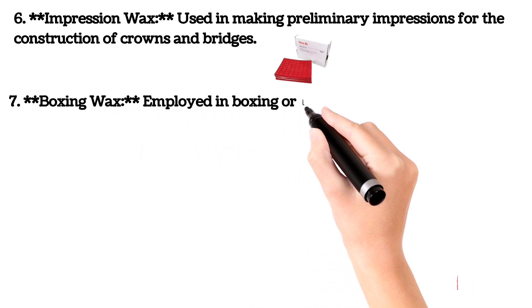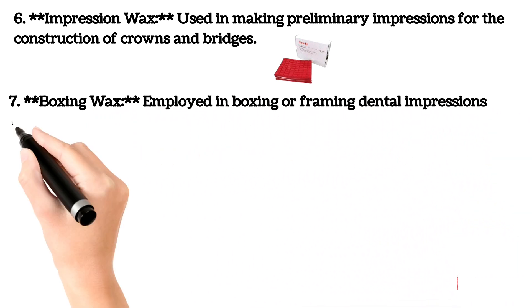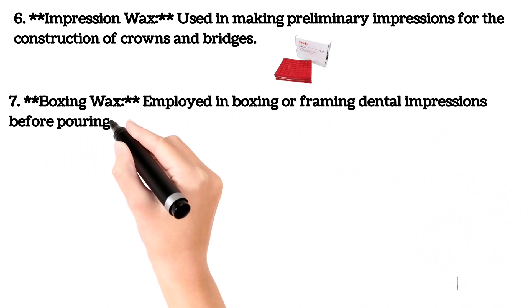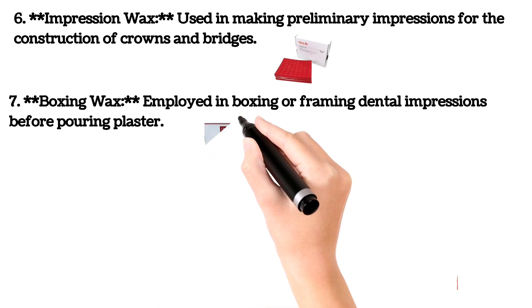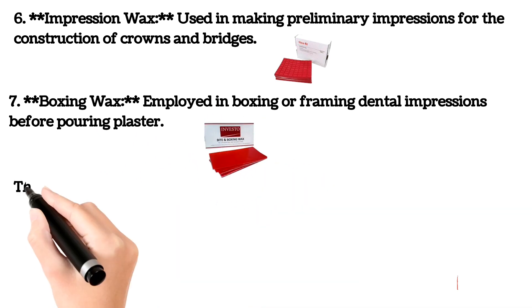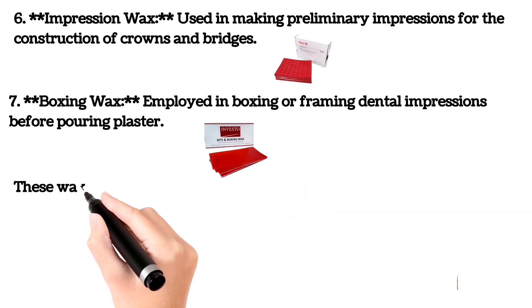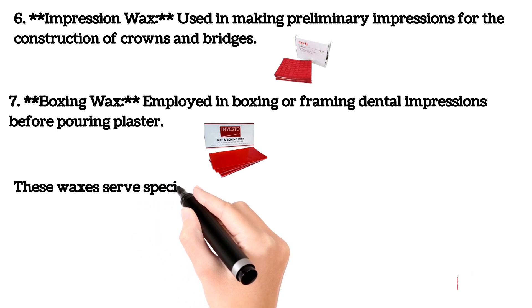Number 7: Boxing Wax. Employed in boxing or framing dental impressions before pouring plaster. Here you can see the picture.